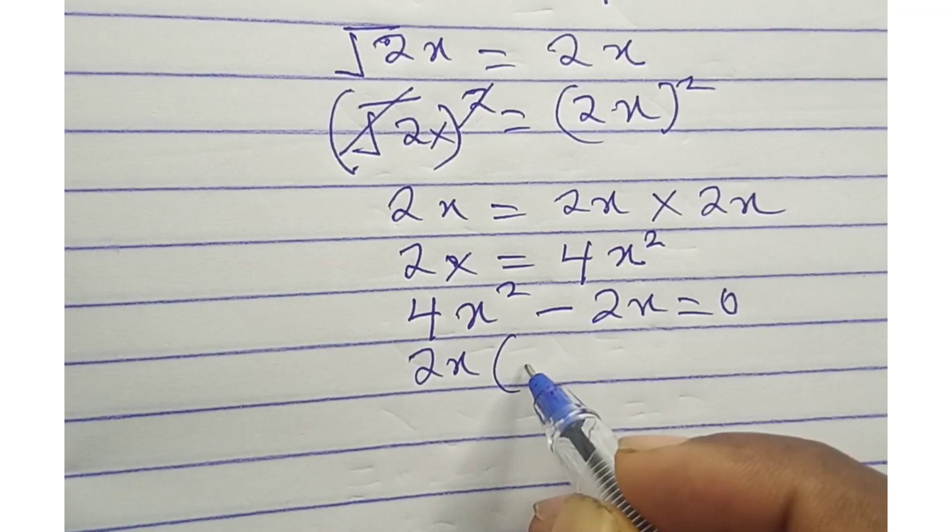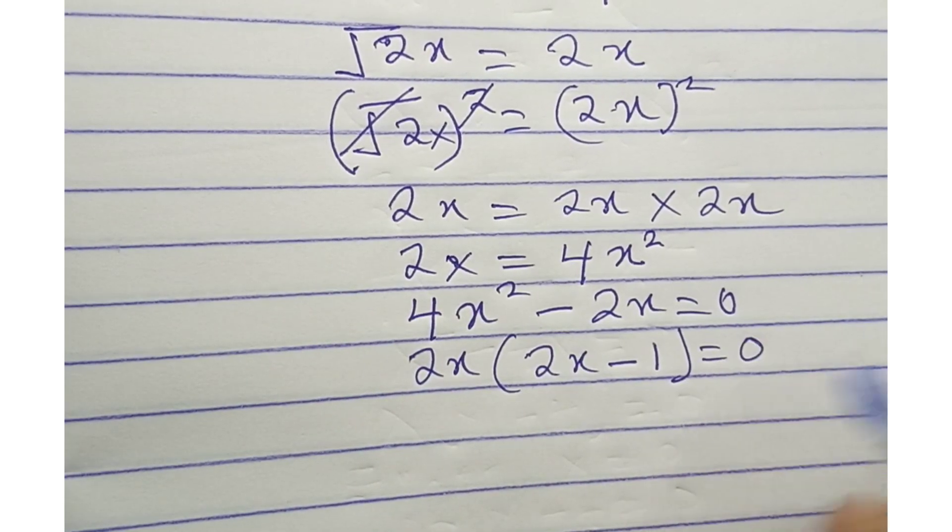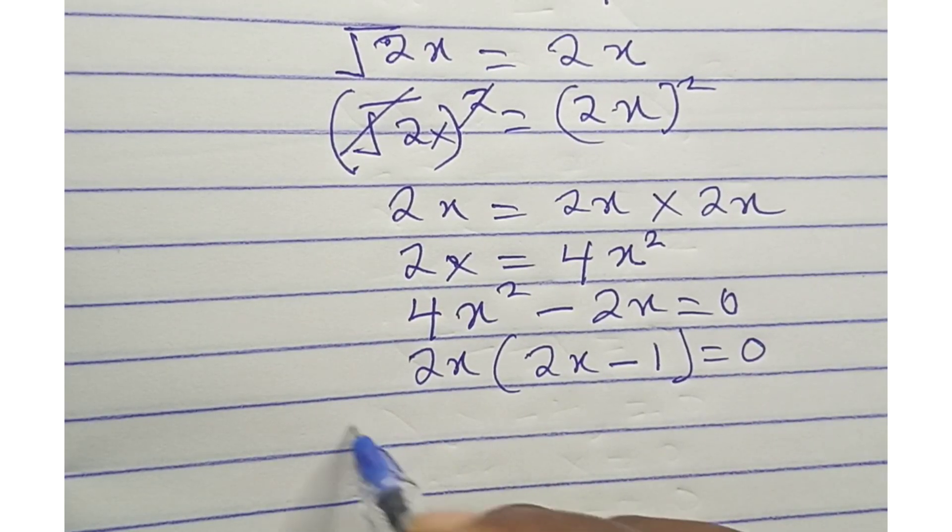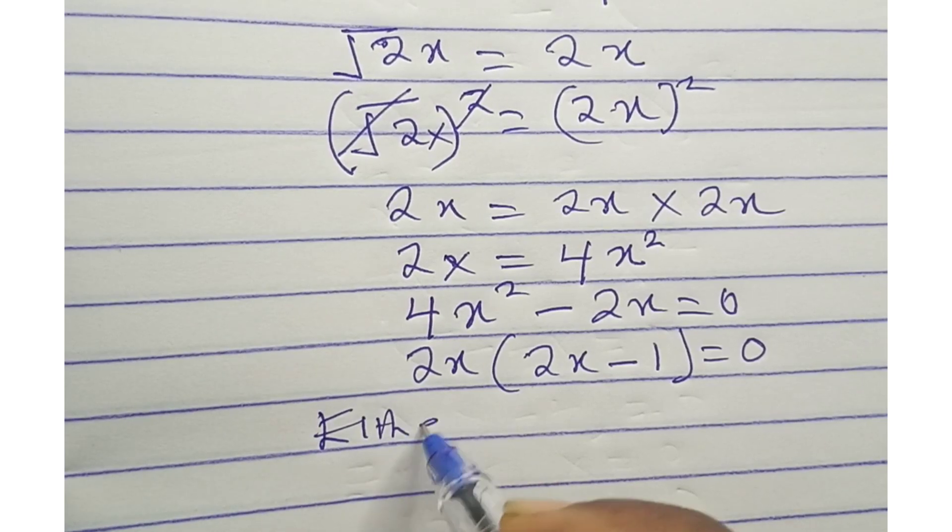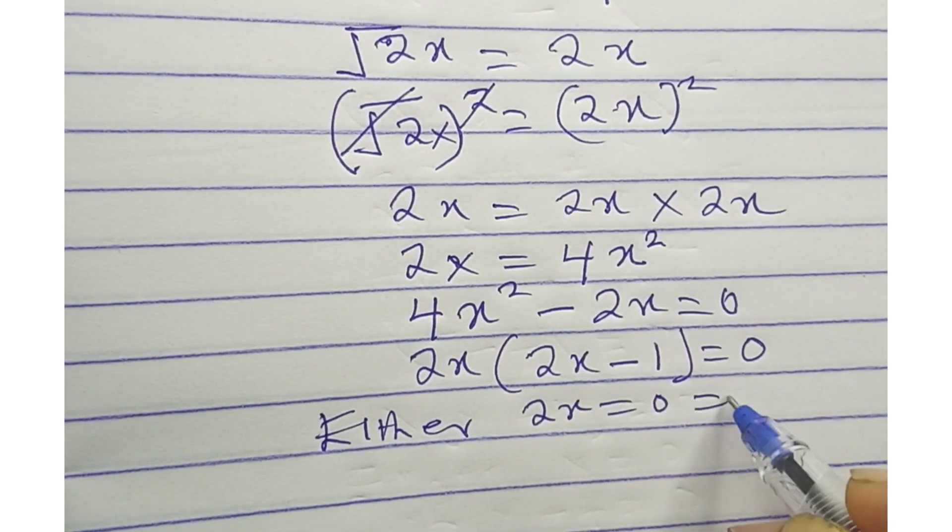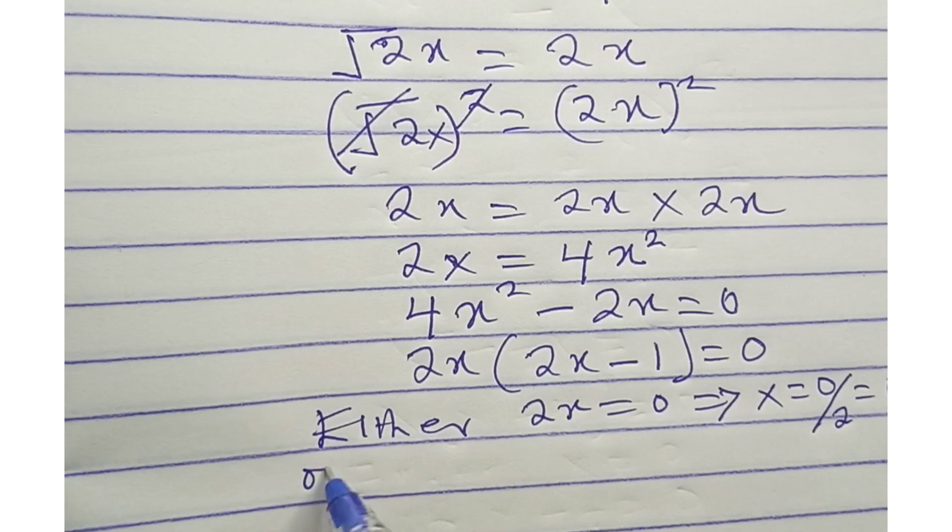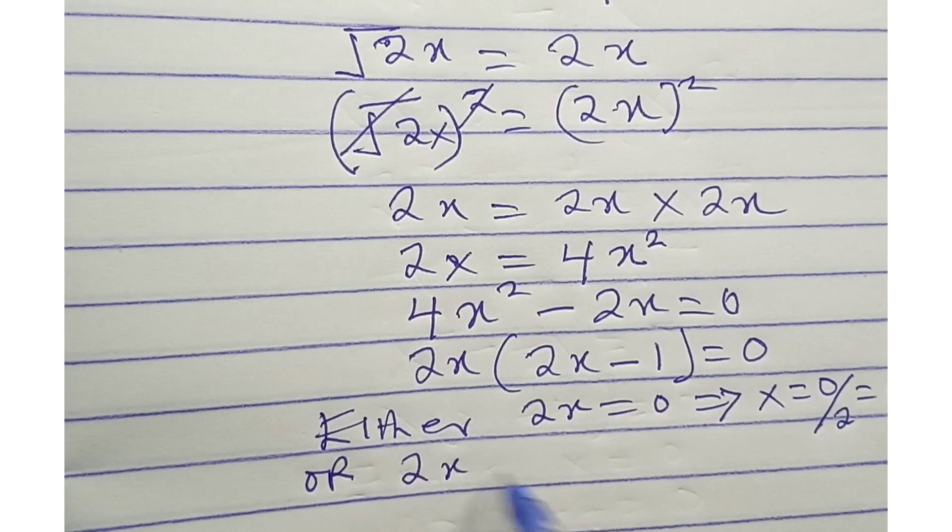Factorize: 2x into 2x minus 1 equals zero. So either 2x equals zero, implying that x equals zero divided by 2, which is equals to zero.